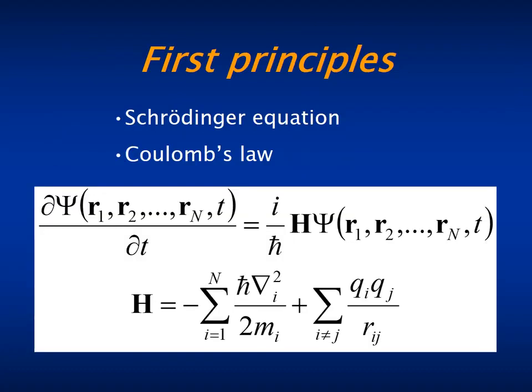Let us start with the very basics that probably most of you already know, but that I will introduce for completeness. First principles methods intend to predict the properties of molecules and materials, starting from just Schrödinger's equation to describe the evolution of the system, and Coulomb's law to describe the interaction between the particles.